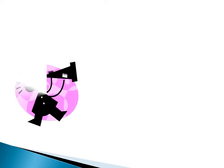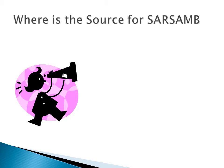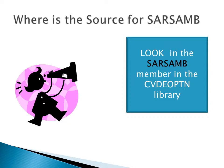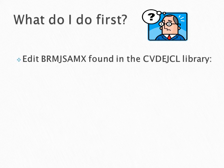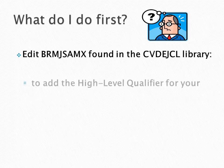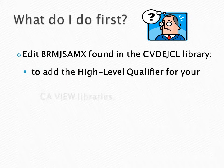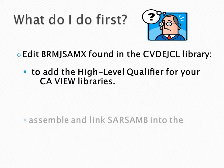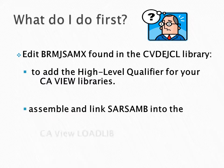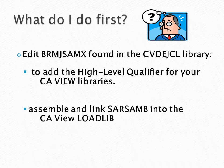Where can we find this information? Where is the source? Look in the SARS-SAM-B member in the CVDE OPTN library. Okay, what do I do first? Edit the BRMJ-SAMX member found in the JCL library. Add the high-level qualifier for your CA View libraries.